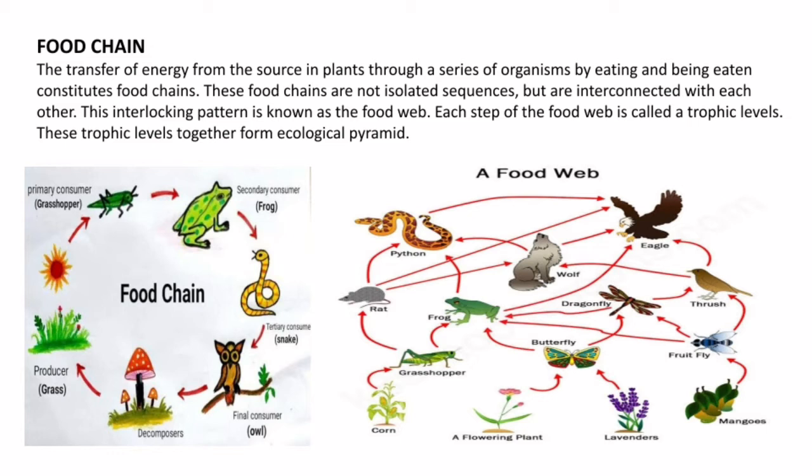A simple food chain example everyone knows: plants grow, then we have grasshopper, from grasshopper to frog, frog to snake, snake to owl. Then everything will die, and from decomposition, vitamins are produced which will go to plants, and the circle continues. In a food web we can see that there is cross-connection between these chains — it's a food chain with interconnection forming an interlocking system, which is the food web.